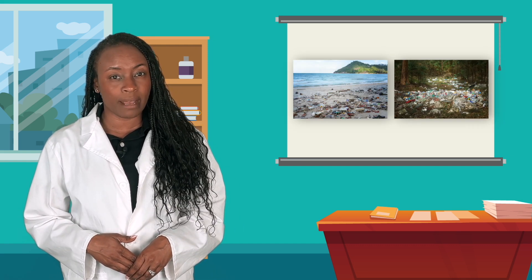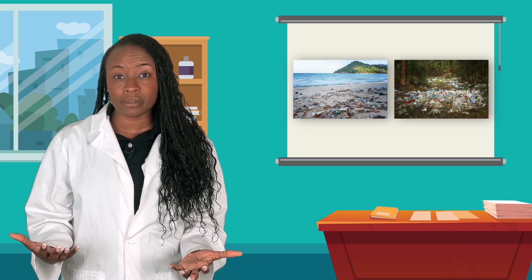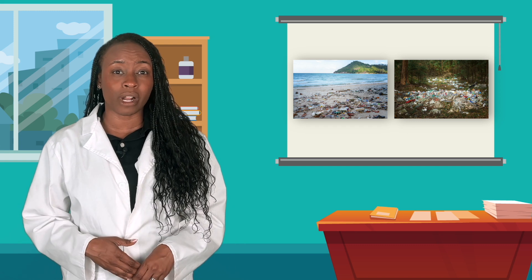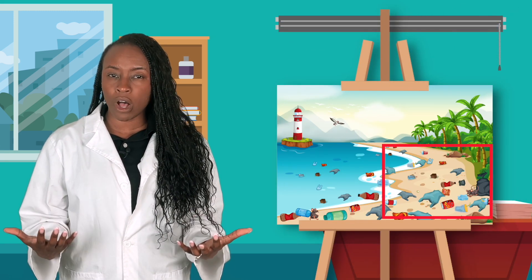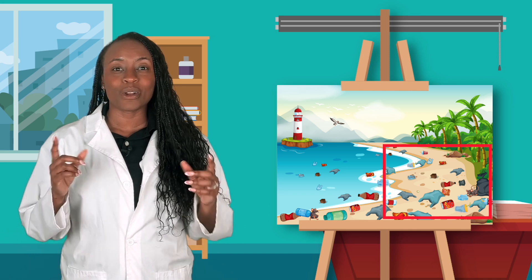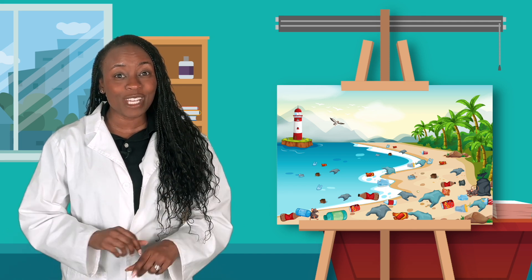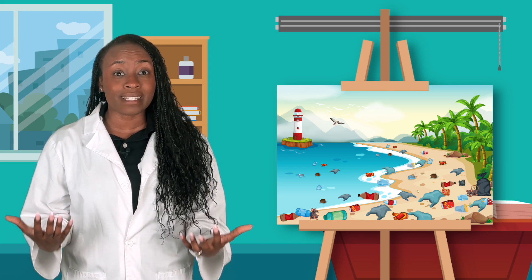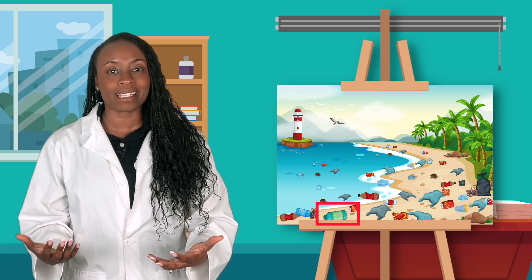Mia noticed something on her trip. There are three different types of pollution. Let's take a look at each one. Land pollution happens when trash is left on the ground instead of being put where it belongs. This can make it hard for plants to grow and can make animals sick. Where does this trash belong? Trash can be disposed of in trash cans. Some of these items could also be recycled and used again, like this plastic bottle.